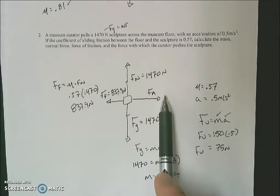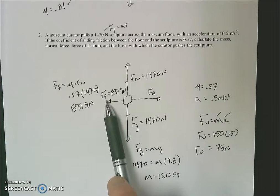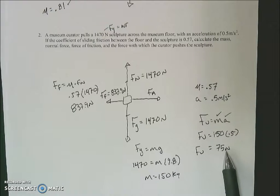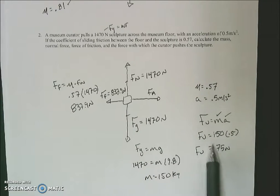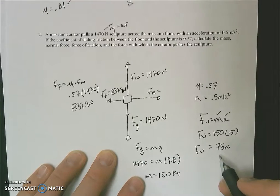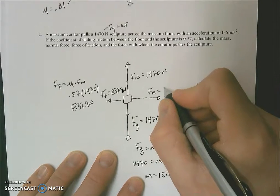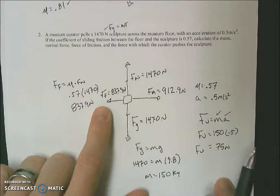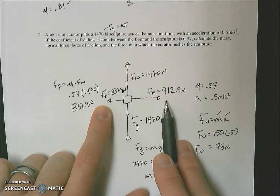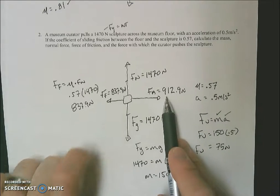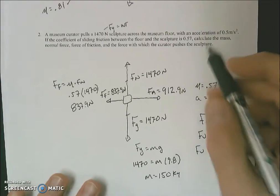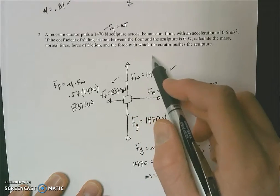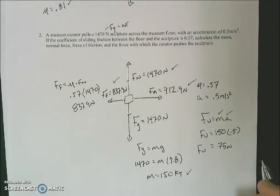I do have a mass, which means I can find my unbalanced force by taking 150 times 0.5, my acceleration. I get 75 newtons as my unbalanced force. So now what that tells me, we know we're accelerating rightward. We know my force to the right is bigger than my force to the left. Which means if I'm to try to find my applied force, I would have to add it to my force of friction, so that this is 75 larger than that. My force applied is going to be 837.9 plus 75. That ends up being 912.9 newtons. It looks like we have everything.